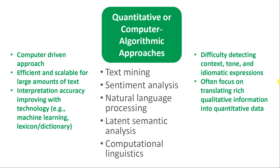In terms of some of the challenges: whereas with a qualitative data analysis approach humans are really good at detecting context, tone, and idiomatic expressions — those really deep characteristics of the text itself, reading between the lines — this is going to be more challenging for most computer-based approaches. Often these are going to focus on translating rich qualitative information into quantitative data of some kind, which means there's going to be some loss in terms of the richness of the information. But it does have the advantage that once it has quantitative properties, you can apply descriptive statistical analysis and inferential statistical analysis to further assess and analyze the phenomenon of interest.